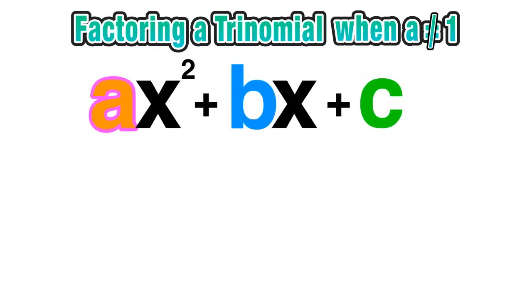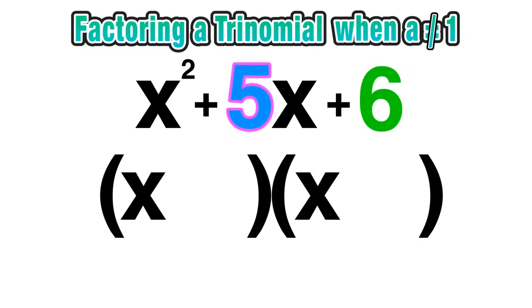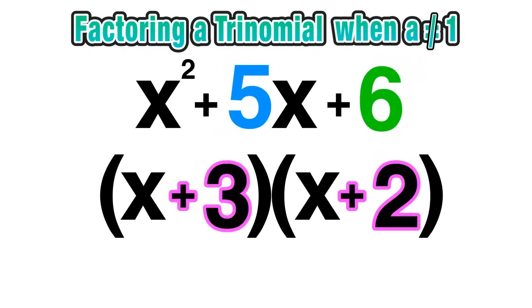Hang on a sec, how do we factor a trinomial when the leading coefficient is one? Let's do a quick recap using the example x²+5x+6. We can easily factor this by finding two numbers that add to 5 and multiply to 6. In this case, 3 and 2, so (x+3)(x+2) are our factors.